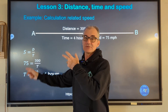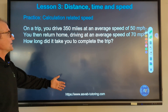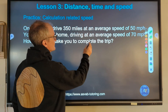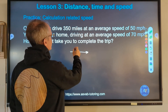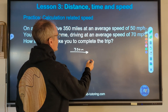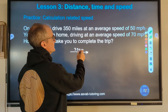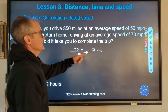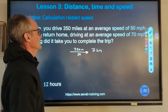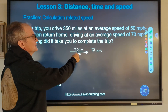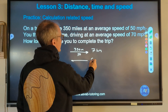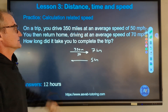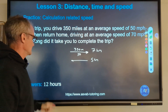Here's a sample problem. On a trip, you drive 350 miles at an average speed of 50 miles per hour. Divide 350 by 50 to get seven hours. You then return home driving an average of 70 miles per hour — you still go 350 miles, divided by 70 miles per hour, so it takes five hours to go back. How long did the trip take altogether? Seven hours to get there plus five hours to get back equals a total of 12 hours travel time.